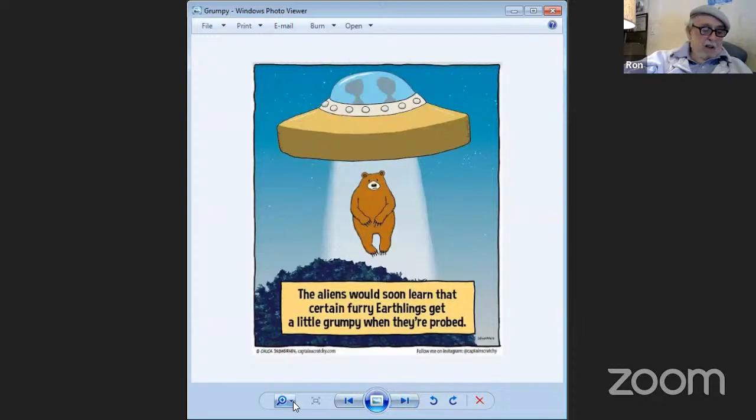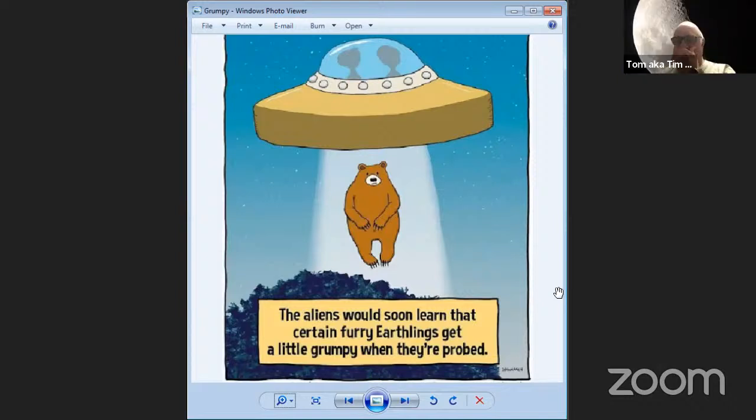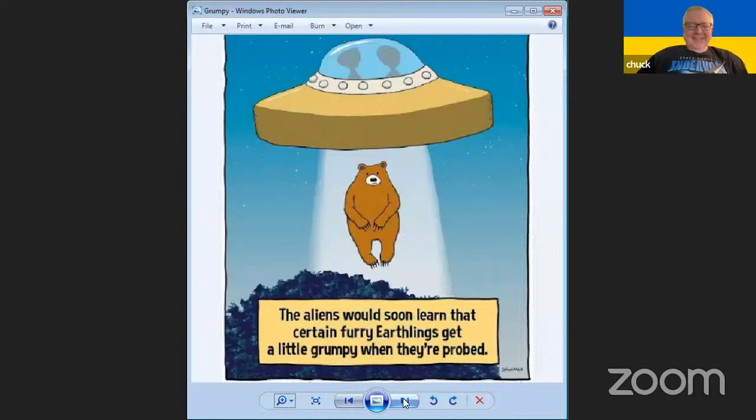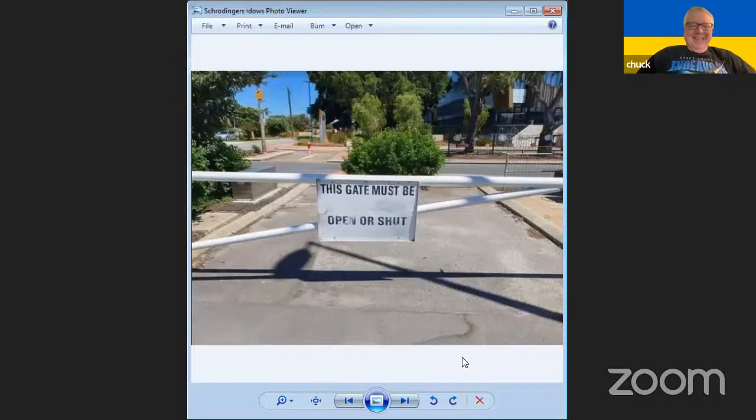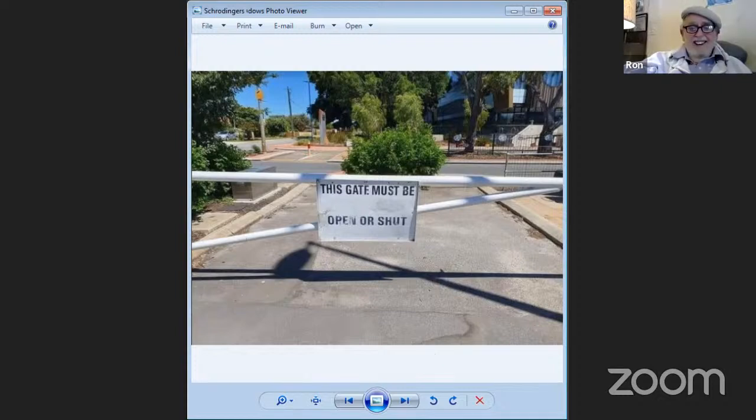Aliens in a UFO are sucking up a terrible grizzly bear. You can soon learn that certain furry earthlings get a little grumpy when they're probed. Now this was titled Schrodinger's Gate. This is before the wave function collapsed. The sign says it's either going to be open or shut.